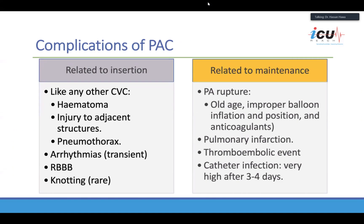Complications of the PA catheter are similar to any CVC line: hematoma, injury to adjacent structures, hemothorax, and arrhythmias. Something rare but frightening is knotting of the PA catheter, which happens when you are pushing without following the trace. Other risks include PA artery rupture if the balloon is left inflated or pushed too hard — especially in elderly patients or with improper balloon inflation. With anticoagulation, there is risk of infarction or thromboembolic events. Infection risk increases up to the third day, and we rarely exceed five days with a PA catheter in situ.